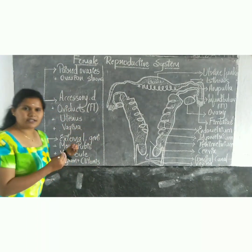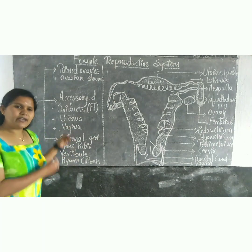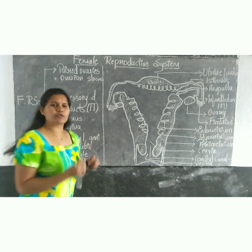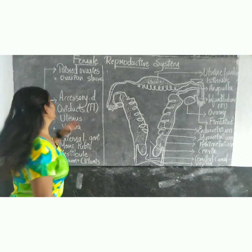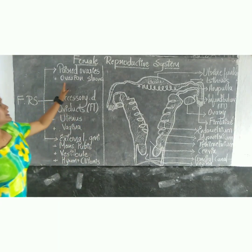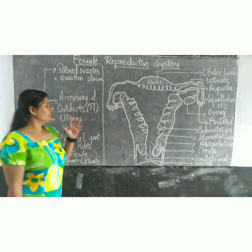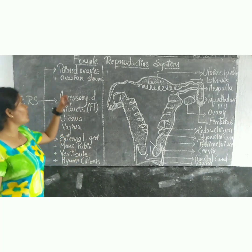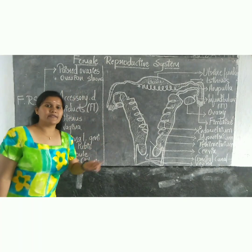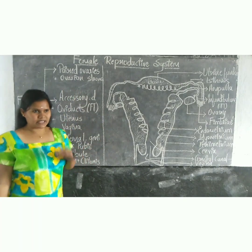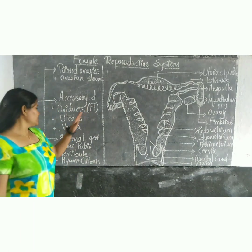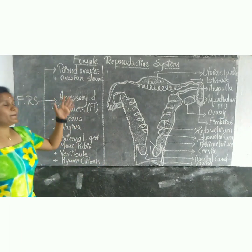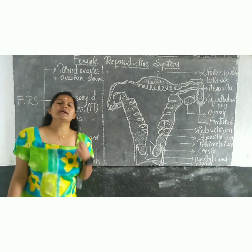The female reproductive system can be studied by dividing it into three or four parts: the first is the paired ovaries, where two ovaries are present, then accessory ducts, and external genitalia.